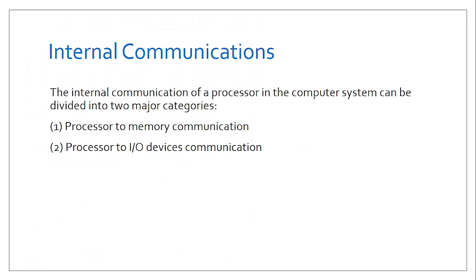In all these operations there must be some kind of communication between the various compartments of the CPU, such as between main memory and the control unit. We have two categories of internal communication: one is processor-to-memory communication, and the second is processor-to-input/output device communication. When a processor wants to fetch instructions from main memory, there must be some kind of communication.